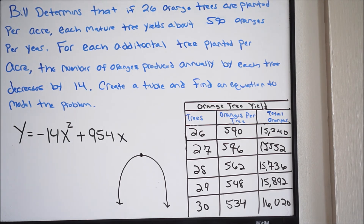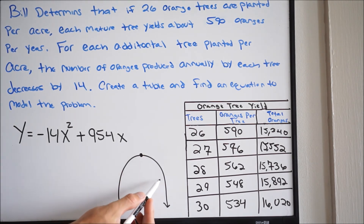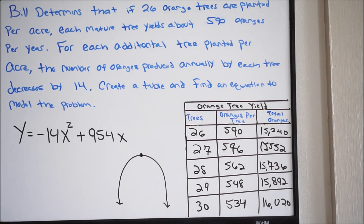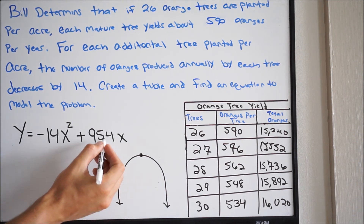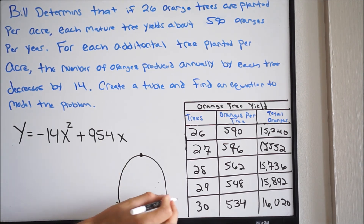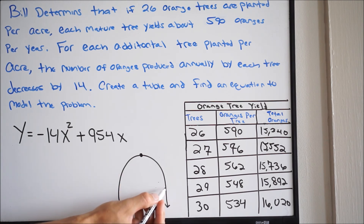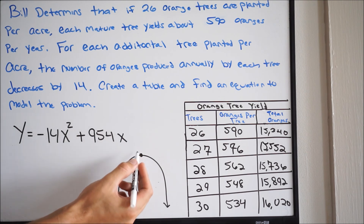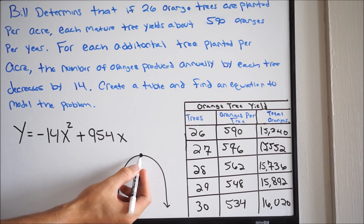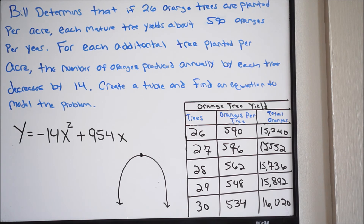So we'll have something like this — opening down, with our vertex being right here. So what this tells us is we're going to have kind of a max point, meaning there's only so many trees you can plant before you're going to start declining on your return. So if you are a farmer and you want to determine how many trees to plant in order to get a max harvest — to max out on the total number of oranges — we're on X and Y here. If you continue to plant trees, eventually you're going to start declining. So you want to find that sweet spot, that max point — in other words, you want to find the vertex.